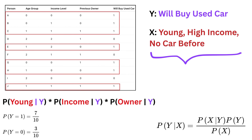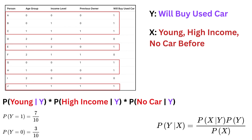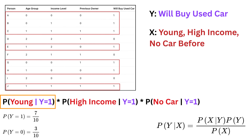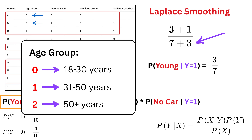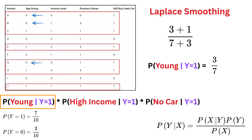For our case, replace age with 'young,' income with 'high income,' and owner with 'no car.' For people who did buy a used car (Y = 1): first, P of young given Y = 1 — out of 7 buyers, 3 are young. We use Laplace smoothing, which adds 1 to the numerator and adds 3 to the denominator (since age group has 3 categories: 0, 1, 2), giving (3+1)/(7+3) = 4/10. This ensures we don't get zero probabilities for any feature, making our model more reliable.